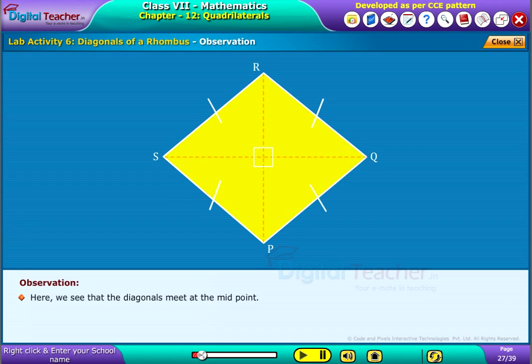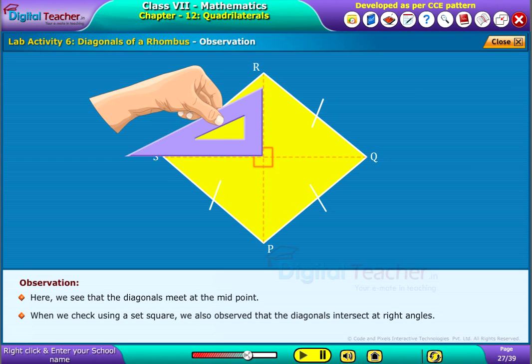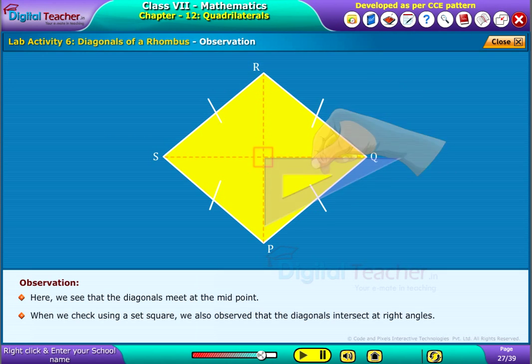Here we see that the diagonals meet at the midpoint. When we check using a set square, we also observe that the diagonals intersect at right angles.